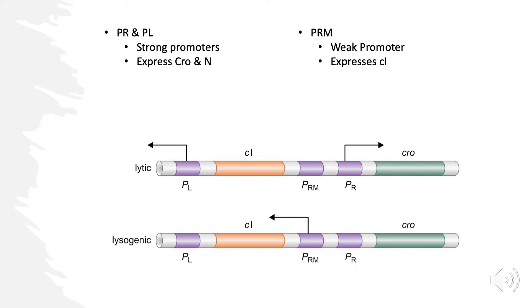PR expresses rightward and produces a protein called Cro. PL expresses leftward and produces something called N, which is known as anti-termination. Anti-termination means the polymerase skips the stop signal and goes further, producing a longer transcript. Then we have PRM, located in the middle between PR and PL. PRM also expresses leftward and produces CI, also known as the lambda repressor — those two names are interchangeable.